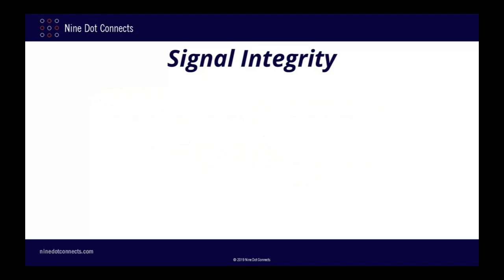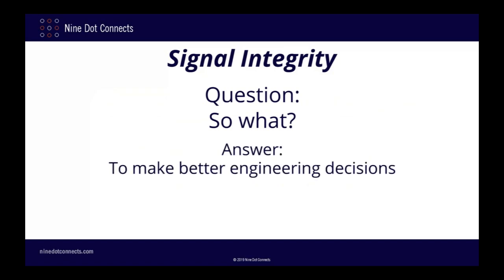So it seems that applying signal integrity analysis makes sense from an economic perspective, but how exactly does it help us with the design process? The short answer is that it helps us make better engineering decisions. As we all know, engineering much like politics is all about compromise. We often need to make changes in one part of the design in order to get another part to work, but how do we know how these changes are going to affect the overall design? Signal integrity analysis can help figure this out.